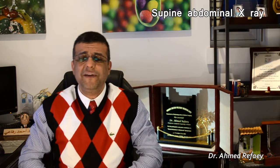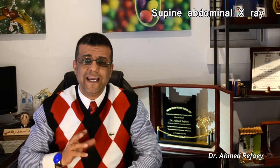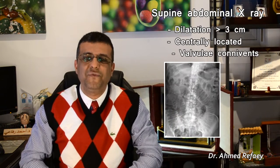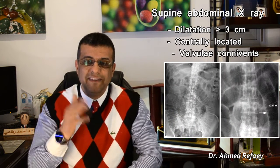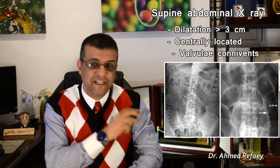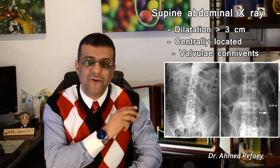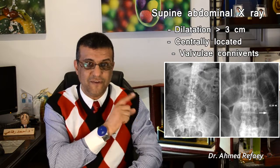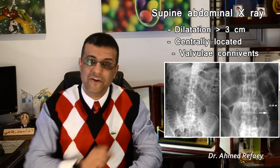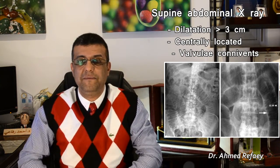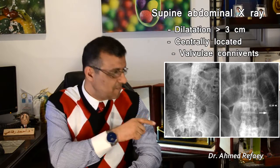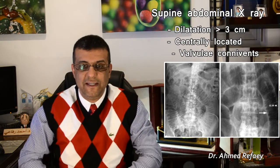Coming to supine abdominal x-ray — what are the radiological findings we can detect from a supine abdominal radiograph in cases of suspected small bowel obstruction? Number one: dilatation of small bowel loops more than 3 cm, which are centrally located, with appreciation of valvulae conniventes, which are mucosal folds crossing the entire lumen of the dilated bowel loops, as seen in these images.